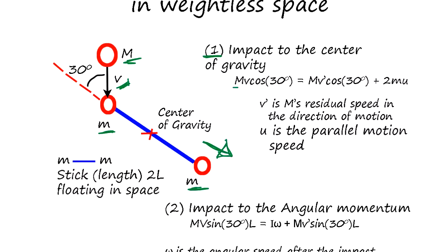MV is the momentum and this component cosine 30 degree in this direction is going to be 2MU. We have 2M moving at speed U and also there is this mass M, the speed change to V prime.